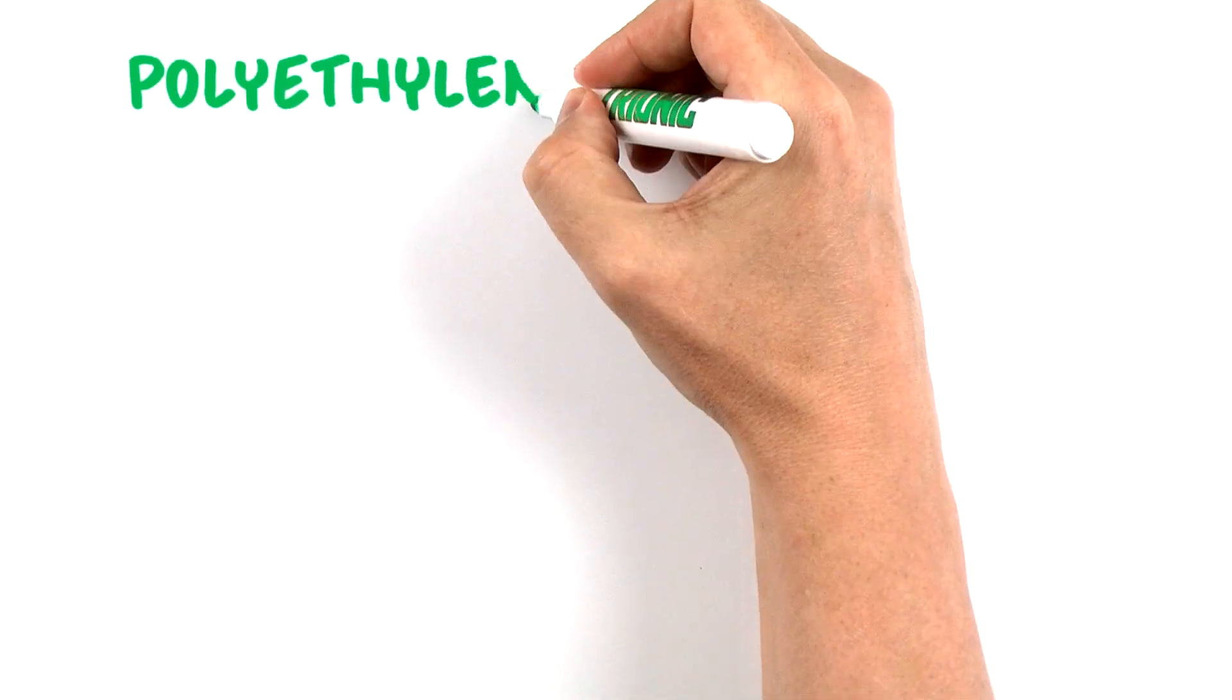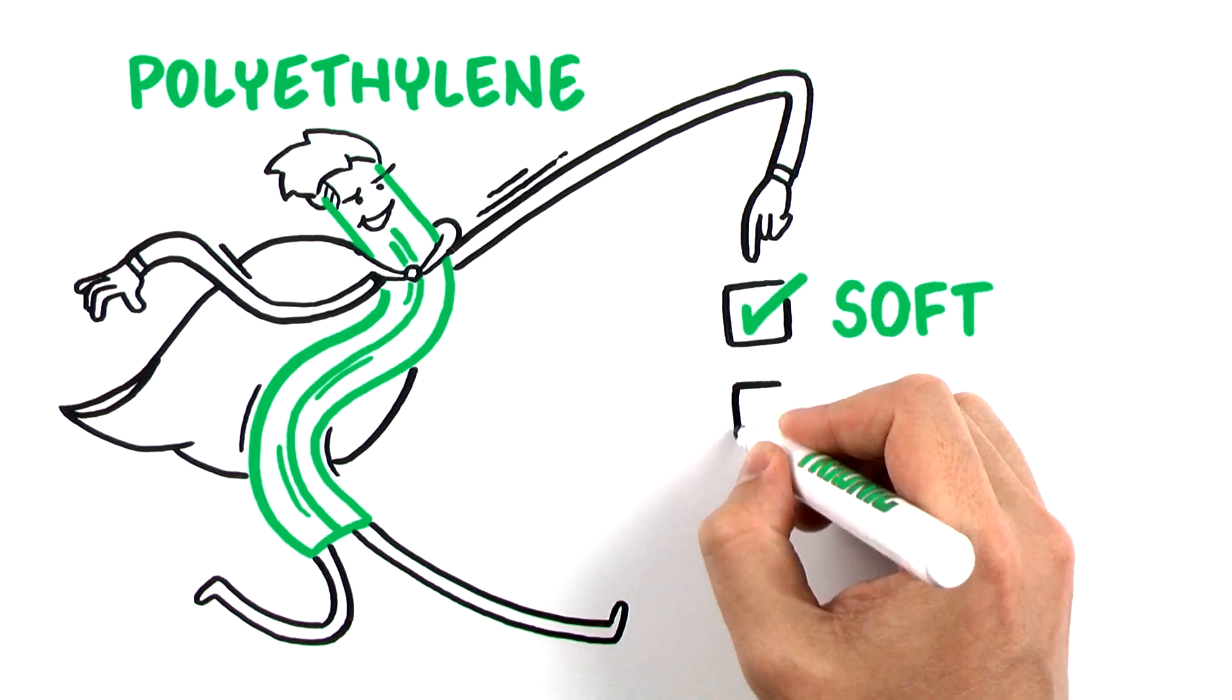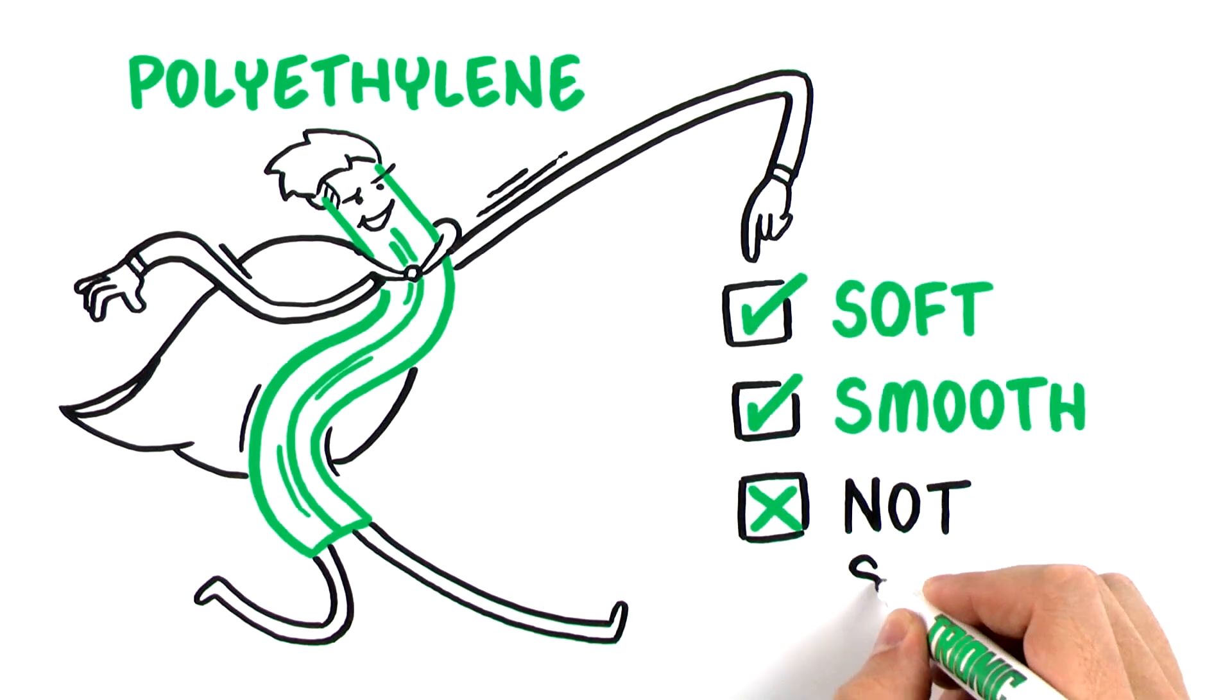Polyethylene is today's turf fiber. It's super soft and smooth, but not nearly as strong as nylon.